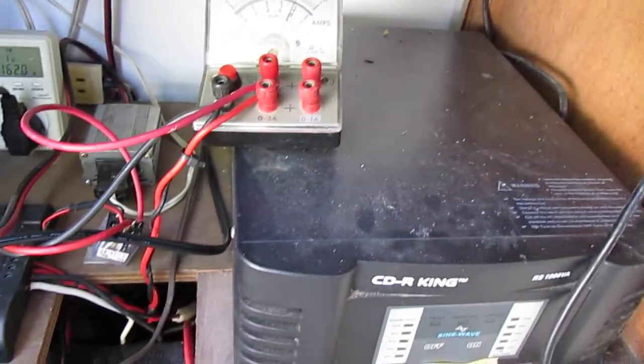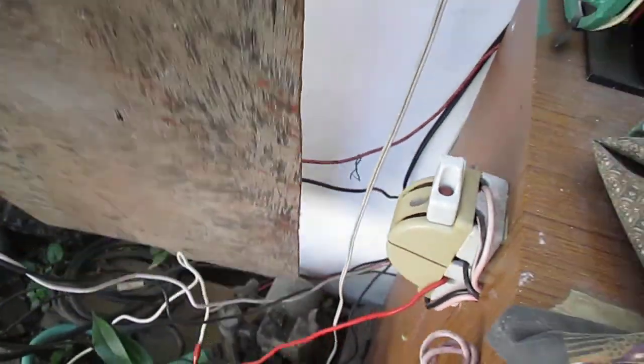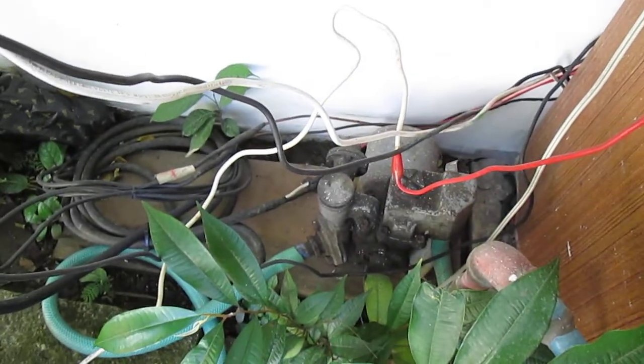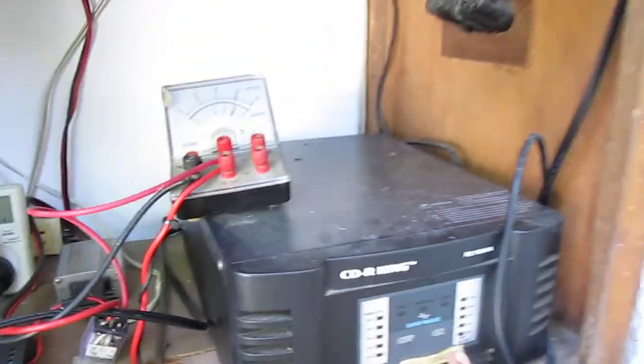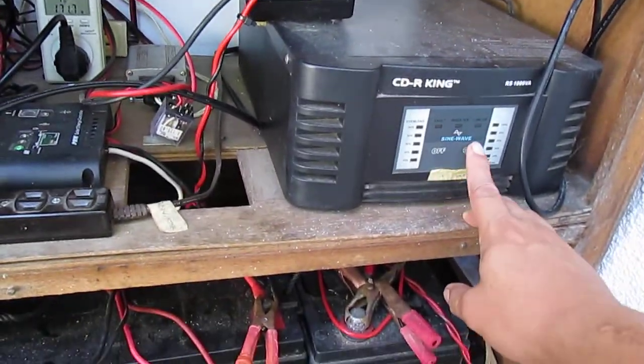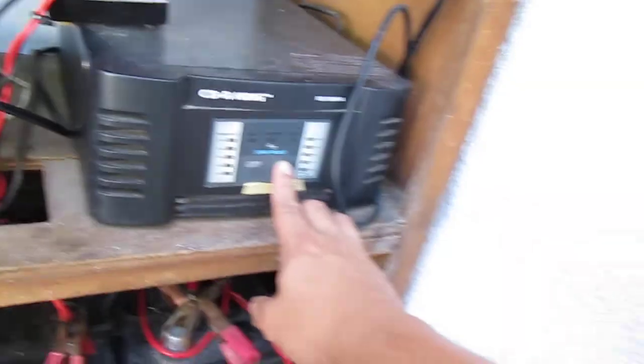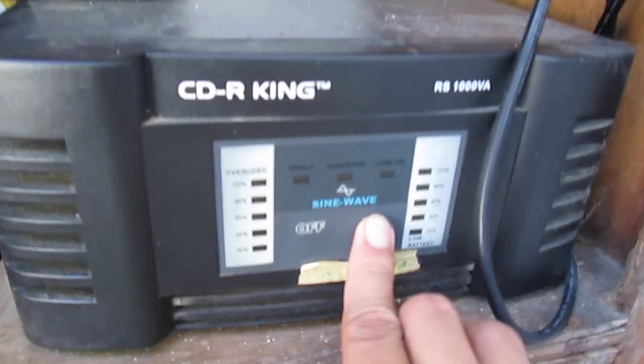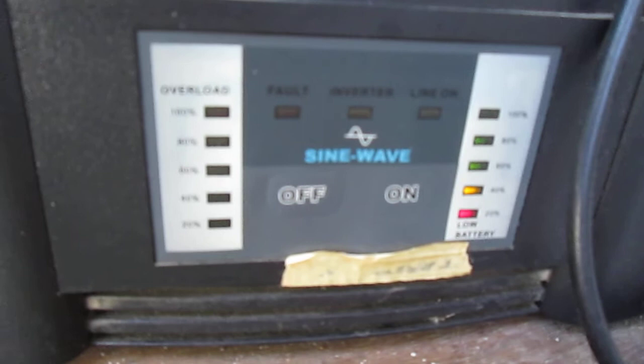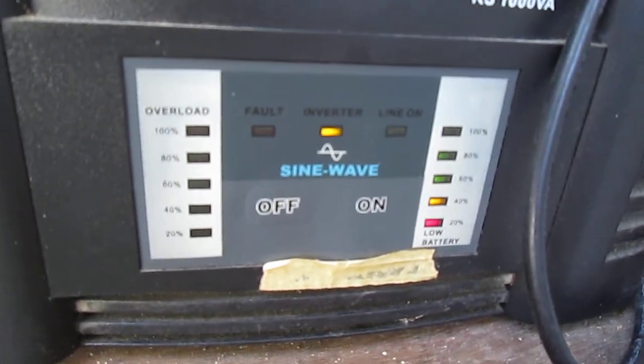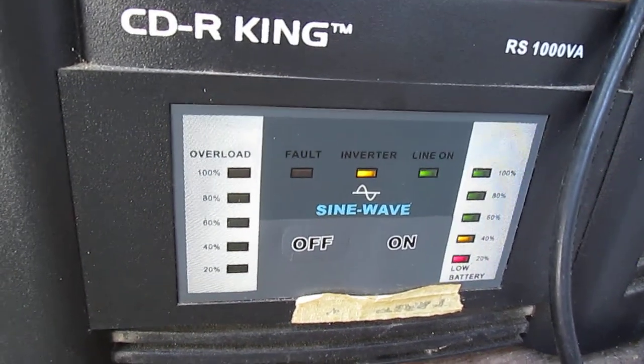What we are doing here is our water pump. See that water pump is operated by the off-grid inverter. This is a simple demonstration, I will turn it on. I will turn on the water pump.